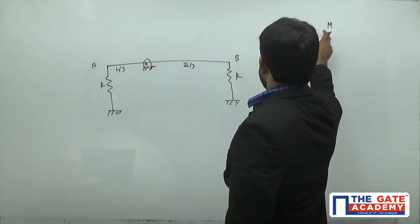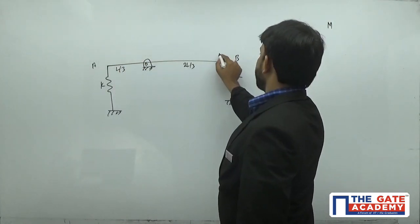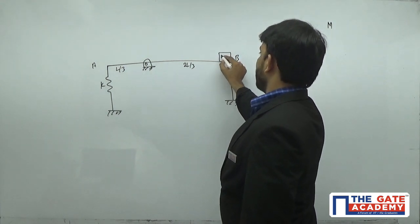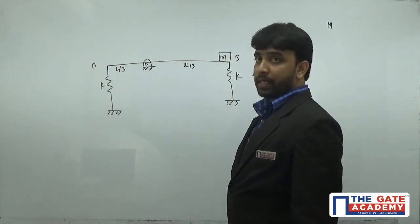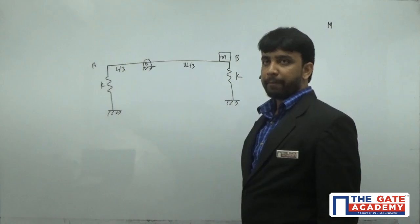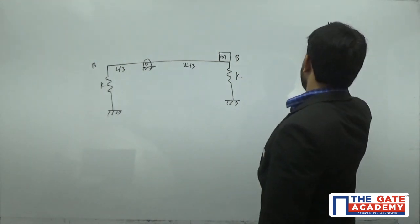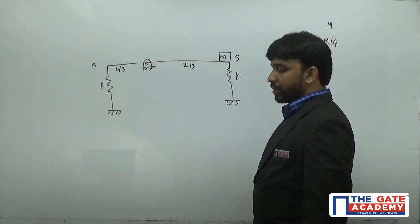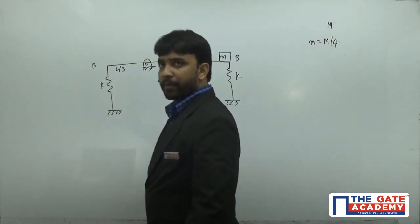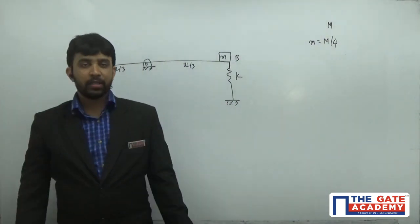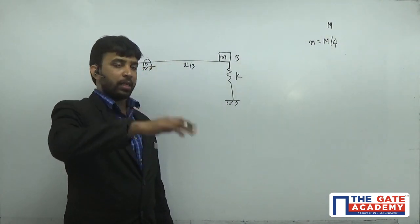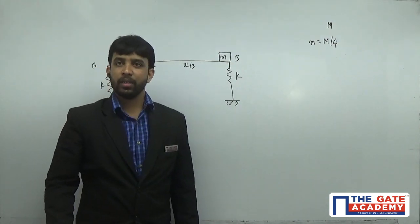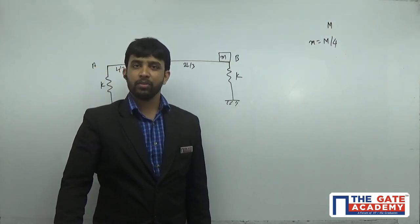A point mass of small m is placed at end B, where small m equals M/4. If we disturb this rod, it oscillates. We are asked to find the frequency of those oscillations.